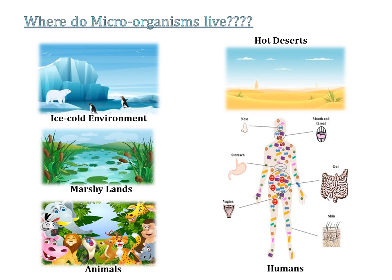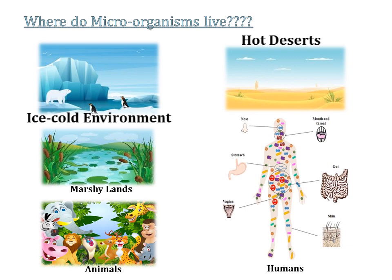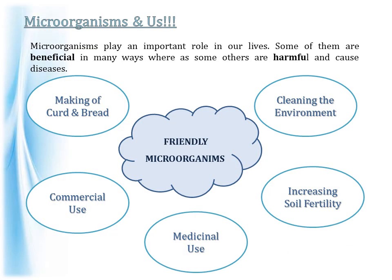So we have studied what microorganisms are and the classification of microorganisms. Now the next section is: where do microorganisms live? There are microorganisms everywhere, from ice-cold environments to very hot deserts. Microorganisms are also seen in marshy lands, in animals, and inside and outside of humans.